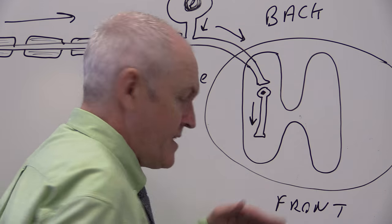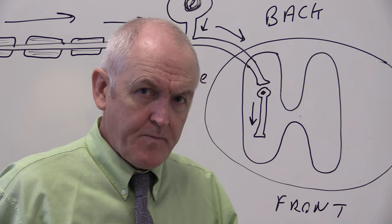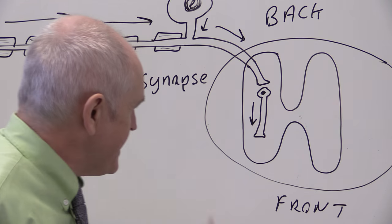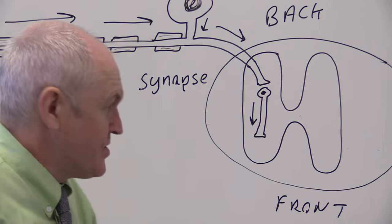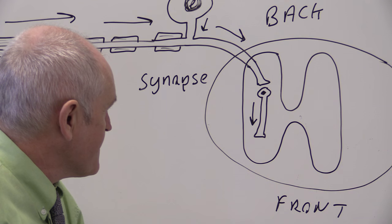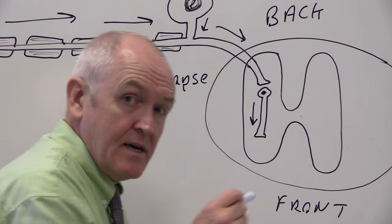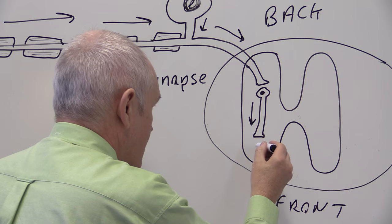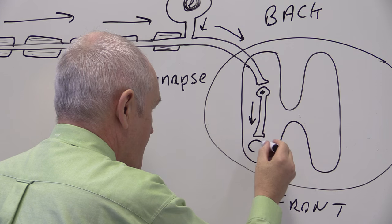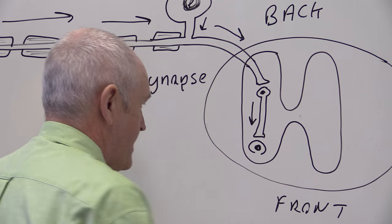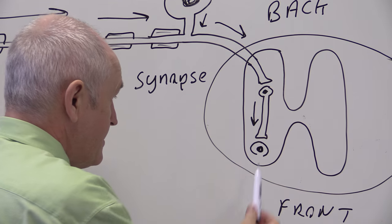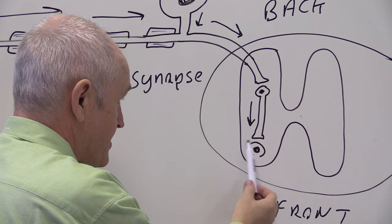So this is the ventral surface or the anterior surface of the spinal cord, and here there is the cell body of a motor neuron, just there. Again, not touching; there's a physical gap called the synapse.